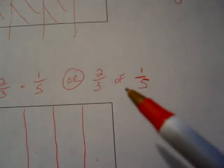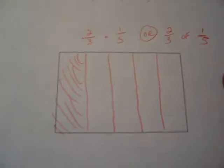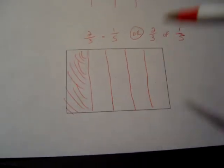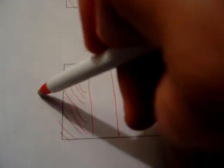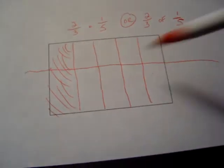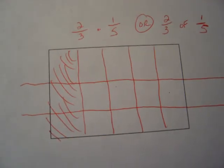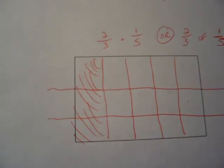And of this much, 1 fifth, I want to take 2 thirds of it. So to take the 2 thirds, I'm going to split the whole into thirds going the other way like this. Okay? And I need to shade in one of those 3 equal rows. I'm just going to shade the top one. Okay? Hold on a second as I do this, please.